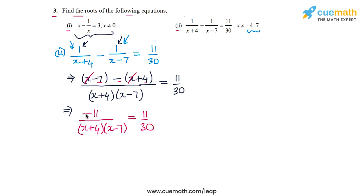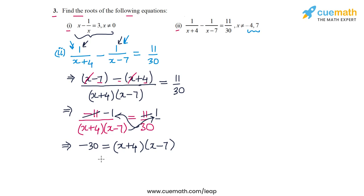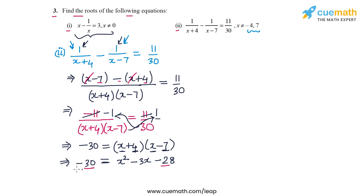Dividing both sides by 11 gives -1/[(x+4)(x-7)] = 1/30. Cross multiplying gives -30 = (x+4)(x-7). Expanding the right hand side: x² - 7x + 4x - 28 = x² - 3x - 28. So we have x² - 3x - 28 = -30, and shifting -30 to the right gives x² - 3x - 28 + 30 = 0.